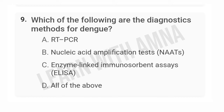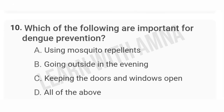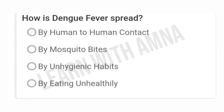Which of the following are important for dengue prevention? A) Using mosquito repellents. B) Going outside in the evening. C) Keeping the doors and windows open. D) All of the above. The correct answer is A. How is dengue fever spread? A) By human-to-human contact. B) By mosquito bites. C) By unhygienic habits. D) By eating unhealthily. The correct answer is B.